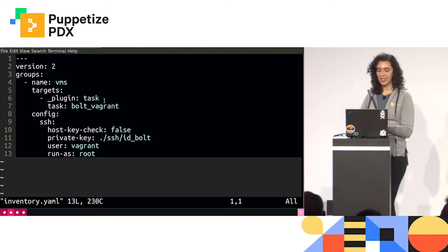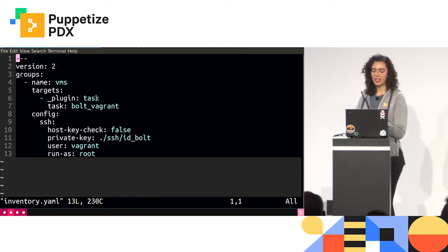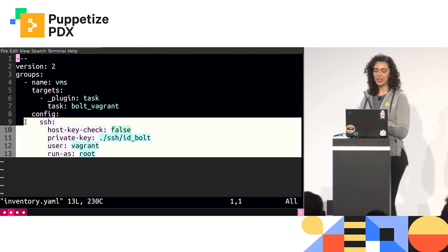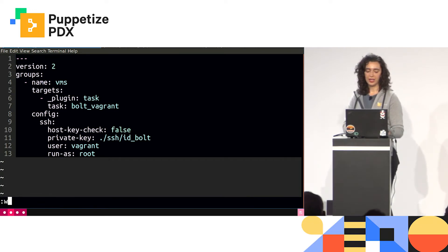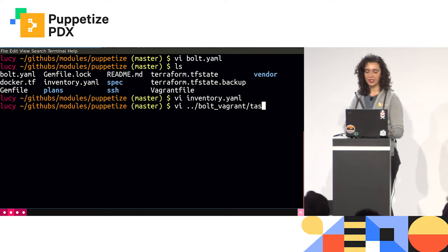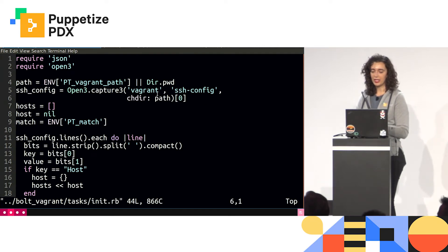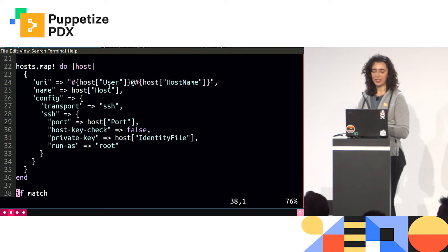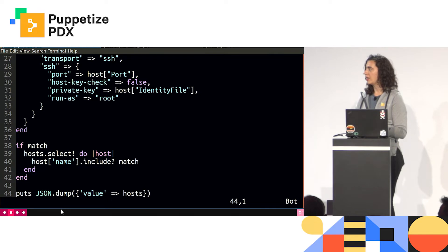I have a task plugin I'm using to load all my Vagrant VMs into the inventory instead of having the IP and all the configuration. I'm running a task called bolt_vagrant, and these two lines define my plugin. The task uses the vagrant ssh config command, parses that into the actual data that Bolt needs to load it into the inventory, and outputs it as JSON.